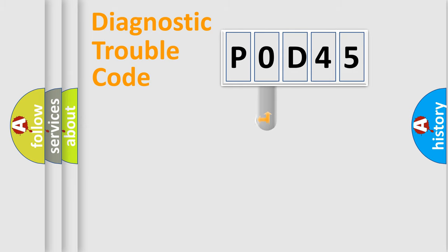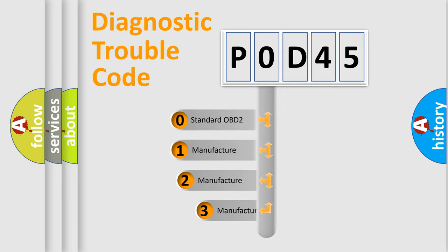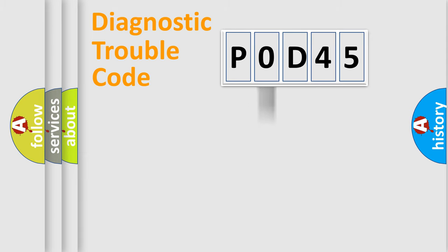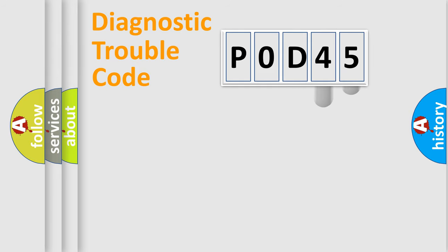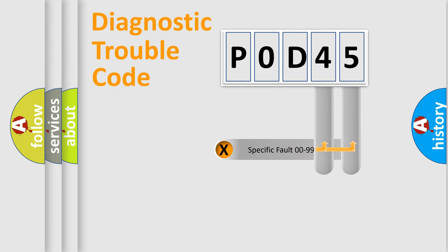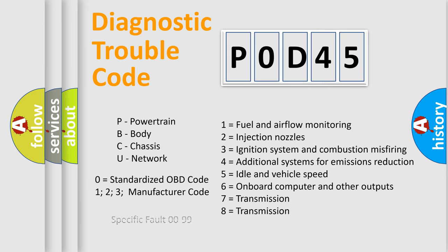This distribution is defined in the first character of the code. If the second character is expressed as zero, it is a standardized error. In the case of numbers 1, 2, or 3, it is a manufacturer-specific error. The third character specifies a subset of errors. The distribution shown is valid only for the standardized DTC code. Only the last two characters define the specific fault of the group. Note that this division is valid only if the second character is expressed by the number zero.